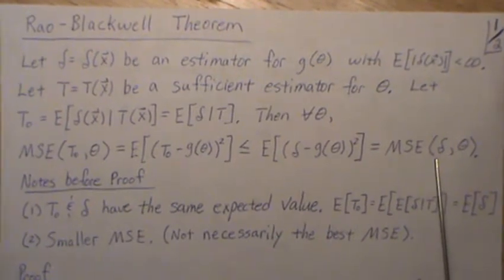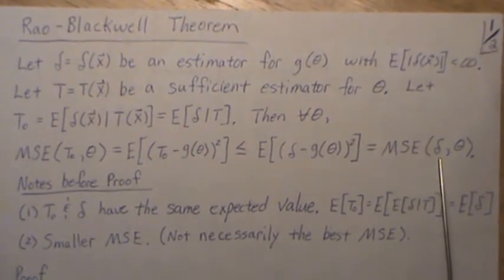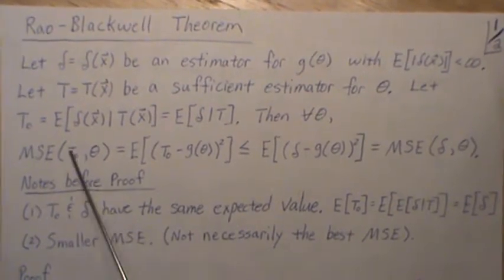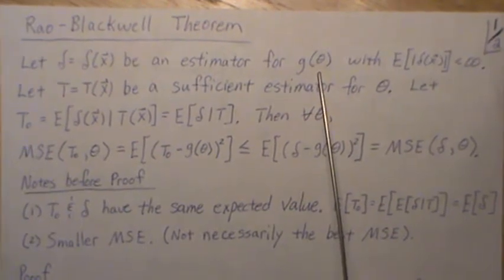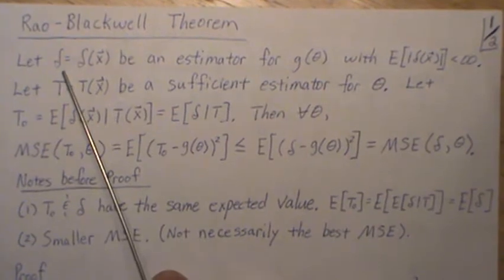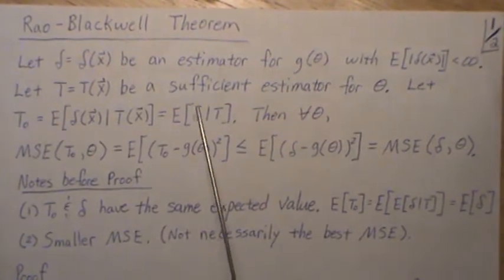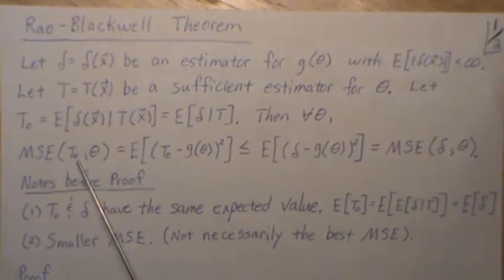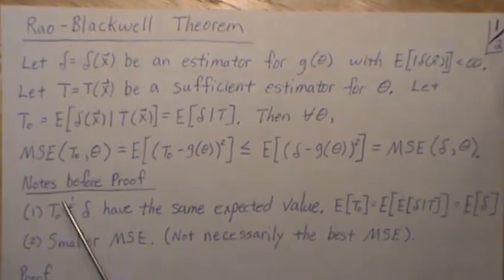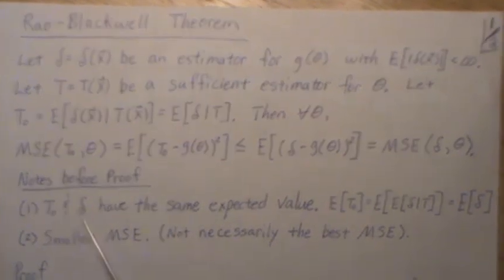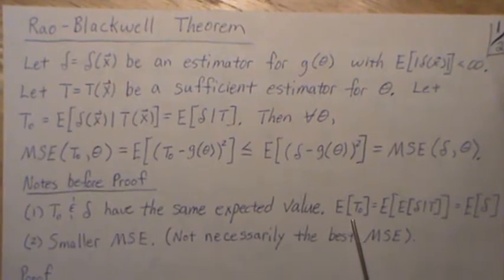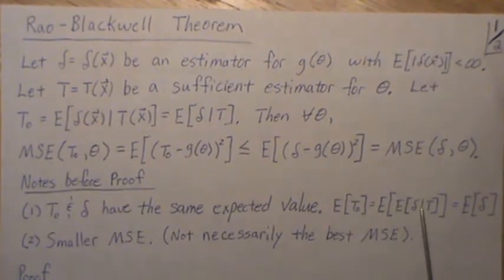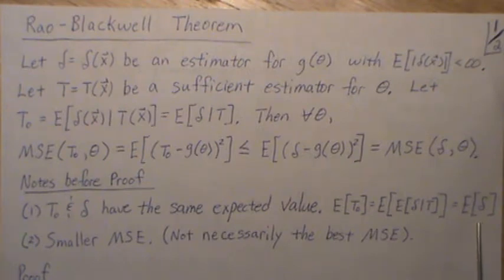For all delta, the mean squared error of our new estimator t0 is less than or equal to the mean squared error of our previous estimator delta. In layman's terms, if we have an estimator for this function, we can improve it by conditioning on a sufficient statistic and averaging over that. The mean squared error cannot be worse than the mean squared error of our original. Note that t0 and delta have the same expected value — the expected value of a conditional expectation equals the unconditional expectation.